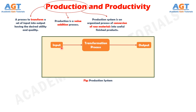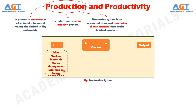Several inputs including men, machines, materials, money, management, information, and energy go through different transformation processes to obtain the desired output in terms of goods and services. This figure represents a typical production system.